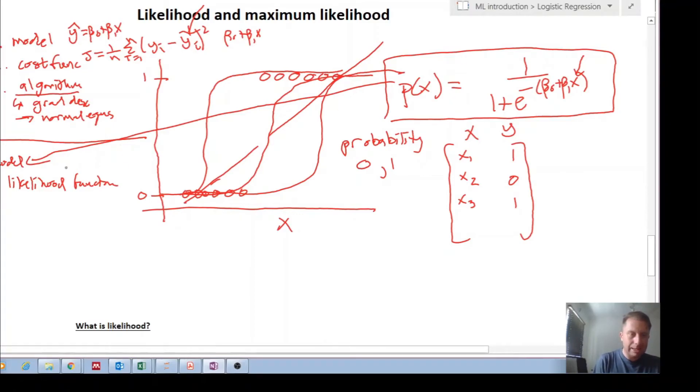And how do we solve for the best parameters in our likelihood function? Well, you can use gradient descent, but a more common method is to use Newton's method. Remember, what are these algorithms doing? They are trying to find the beta parameters so that our function, our model, best fits the actual data. So what's your model, what's your cost function, and what's your algorithm? Model, cost function, and algorithm.